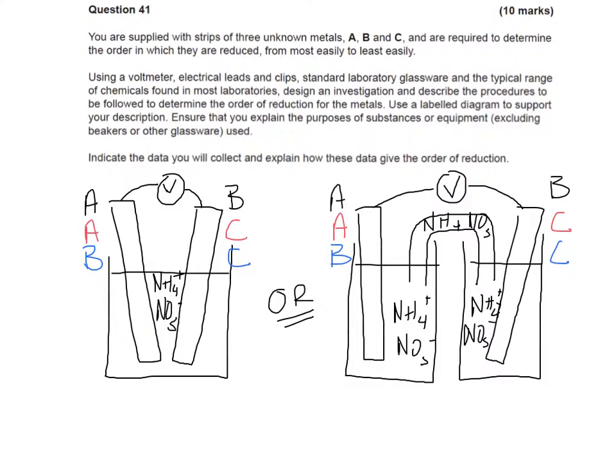If we're expected to be providing a description of the experiment that we're doing, these diagrams would have to be labeled. You'd have to discuss things like variables which we might need to control, like the concentration of the electrolytes that you're using, making sure that the electrodes are clean.